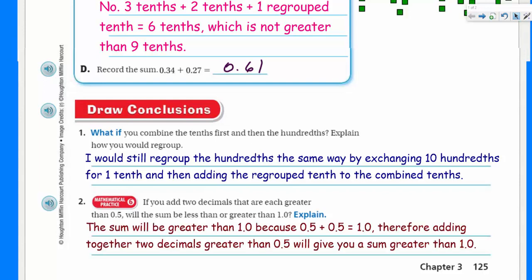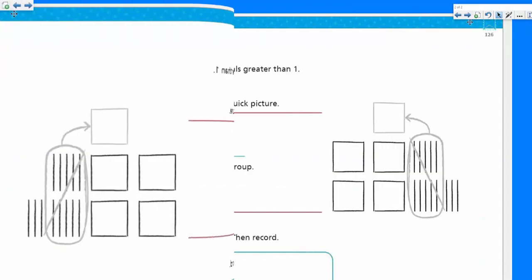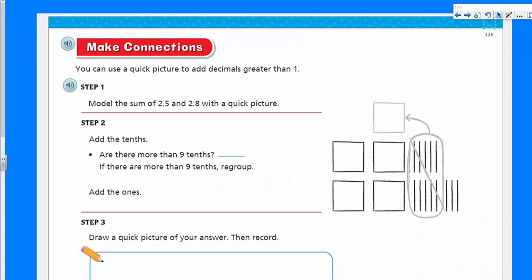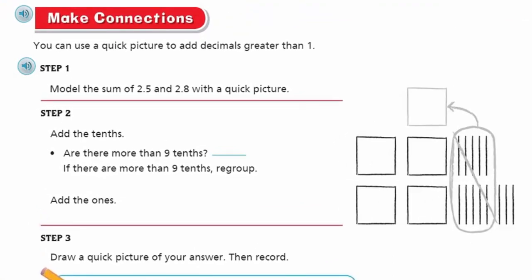Page master, page master, can you please turn the page? I see I had to use that magic word, please. Making some connections. You can use a quick picture to add decimals greater than one. Step one, model the sum of 2.5 and 2.8 with a quick picture. Step two says add the tenths. Are there more than 9 tenths? In this case, yes, because 5 plus 8 is 13. If there are more than 9 tenths, regroup.